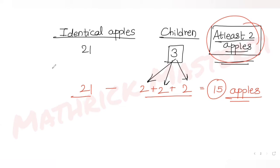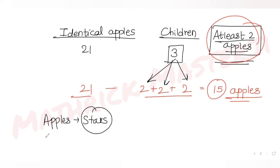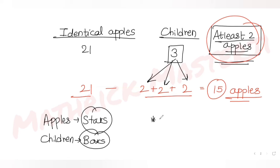In the stars and bars technique, we denote the apples as stars and the dividers between children as bars. For example, if you had 5 apples among 3 children, one possible distribution is 2 apples to the first child, 1 to the second, and 2 to the third — represented as stars separated by bars dividing them into three groups.